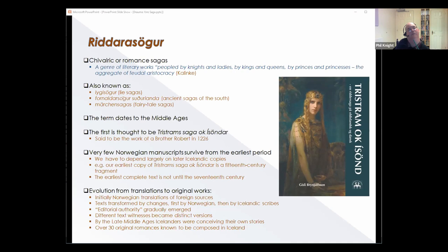But despite changes to words, phrases, sometimes reorganization of events, the essence of the work was initially unaffected. The scribes' intention was still the transmission of someone else's text. But gradually a kind of editorial authority started to emerge, with changes to content, structure and style. Different text witnesses started to become different versions of the stories. And this evolution finally reached its fruition by the late Middle Ages as Icelanders started to conceive their own plots and produce their own imitations. Foreign sources continued to provide inspiration, supplying names, characters, motifs, even complete events. But now, so too did Iceland's own indigenous literature, with its stories of Vikings, berserkers, trolls and shapeshifters. And today we know of over 30 original romances composed in Iceland.